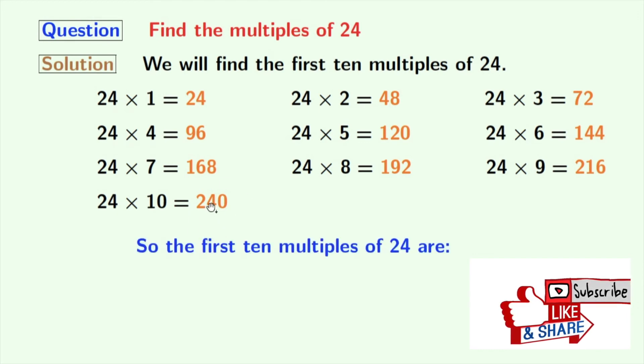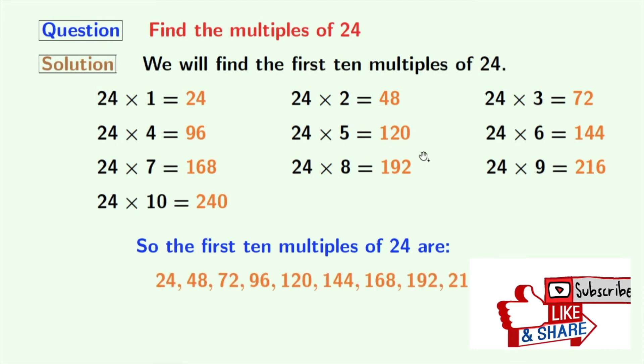So here are the first 10 multiples of 24: 24, 48, 72, 96, 120, 144, 168, 192, 216, and 240. You can find more multiples of 24 following the same way.